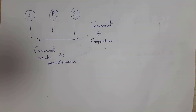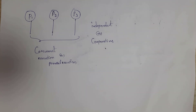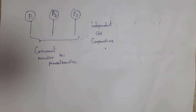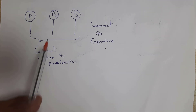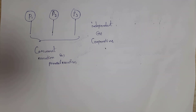This parallel execution is done only if processes are independent of each other. Processes which do not depend on each other are known as independent processes. Cooperative processes means processes which are cooperating with each other.